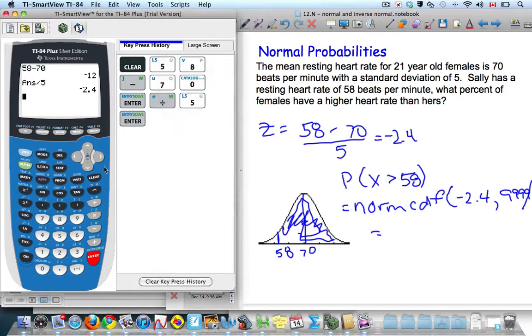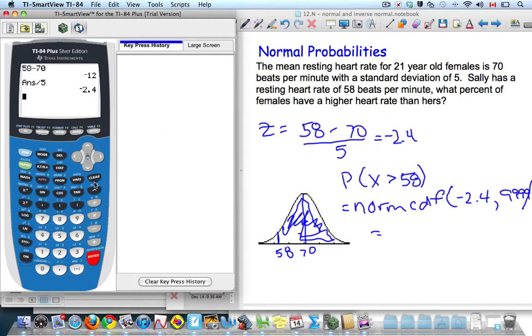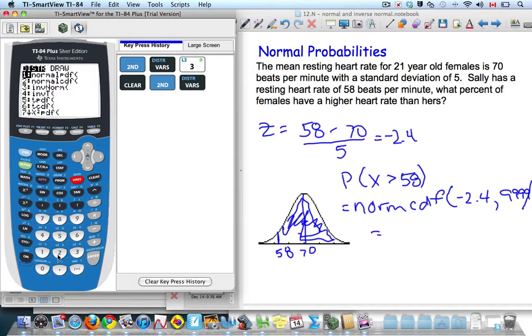So we'll use my calculator. I'm going over here. Clear this. You can watch what I do. If I go second distributions, I want number 2, which is normal CDF.